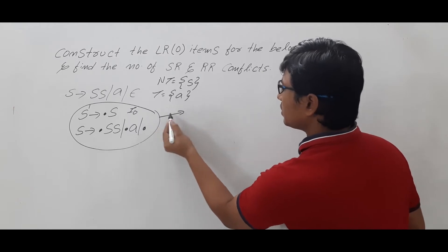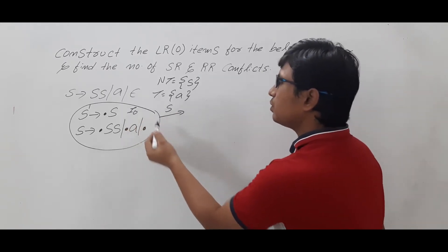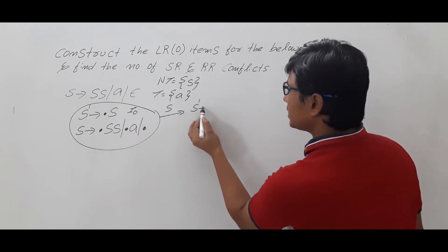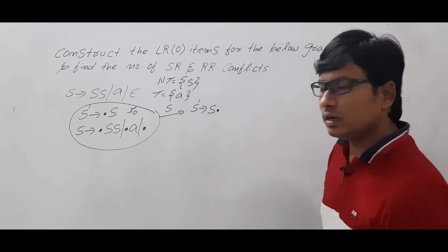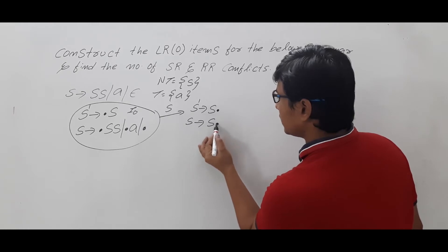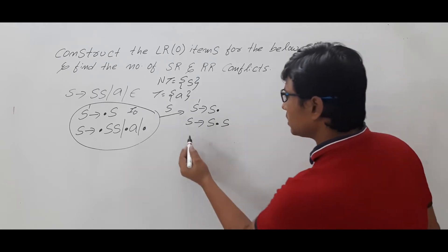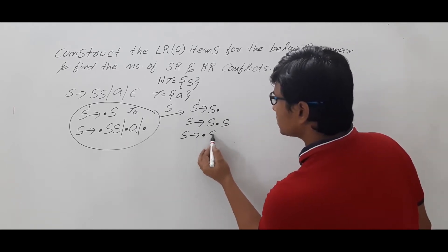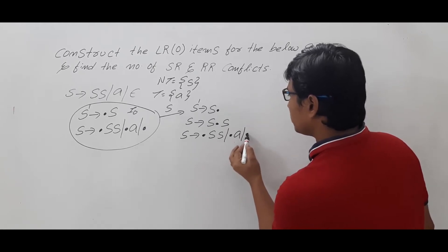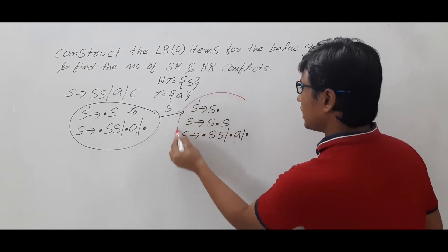Now on S, what will happen? We need to discuss. I am computing the goto on I0 on S, which will be S' → S• and then S → S•S. From this dot there is an S which is a non-terminal, so again I need to write the production of S, keeping the dot in front of every production. So this one I will write it as I1.